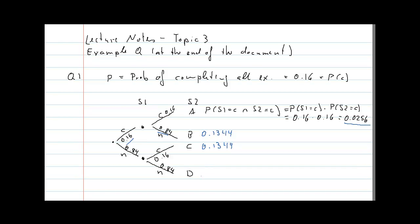And for outcome D — both students not completing — we have 0.84 × 0.84. If you calculate that, you find this is 0.7056.